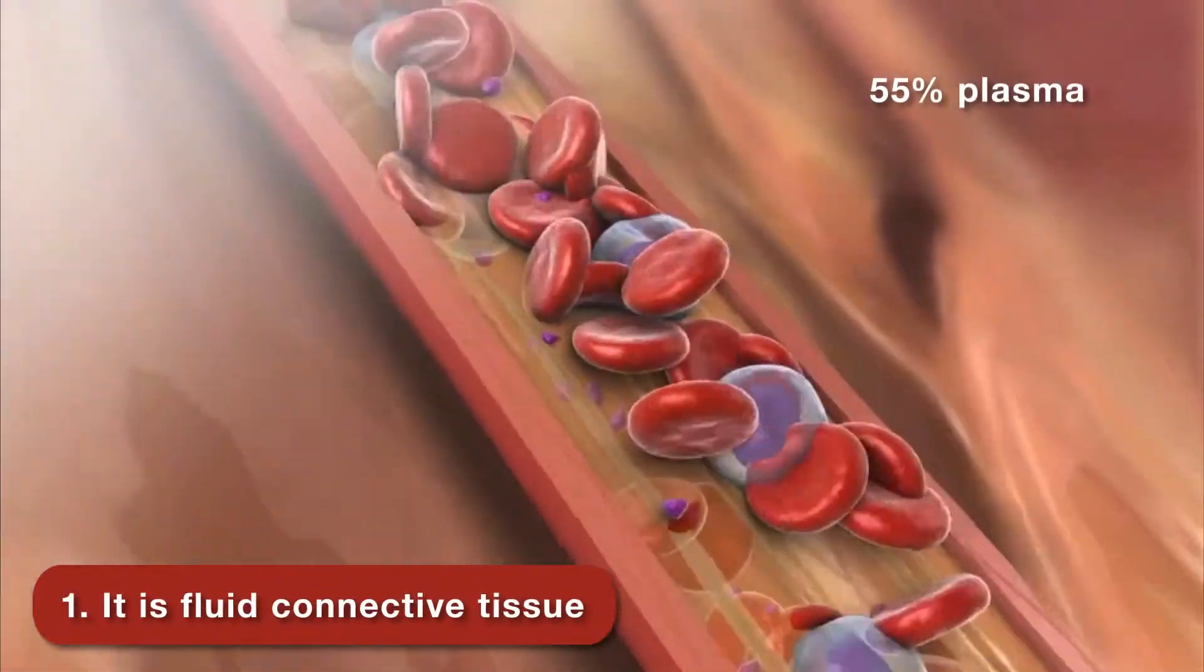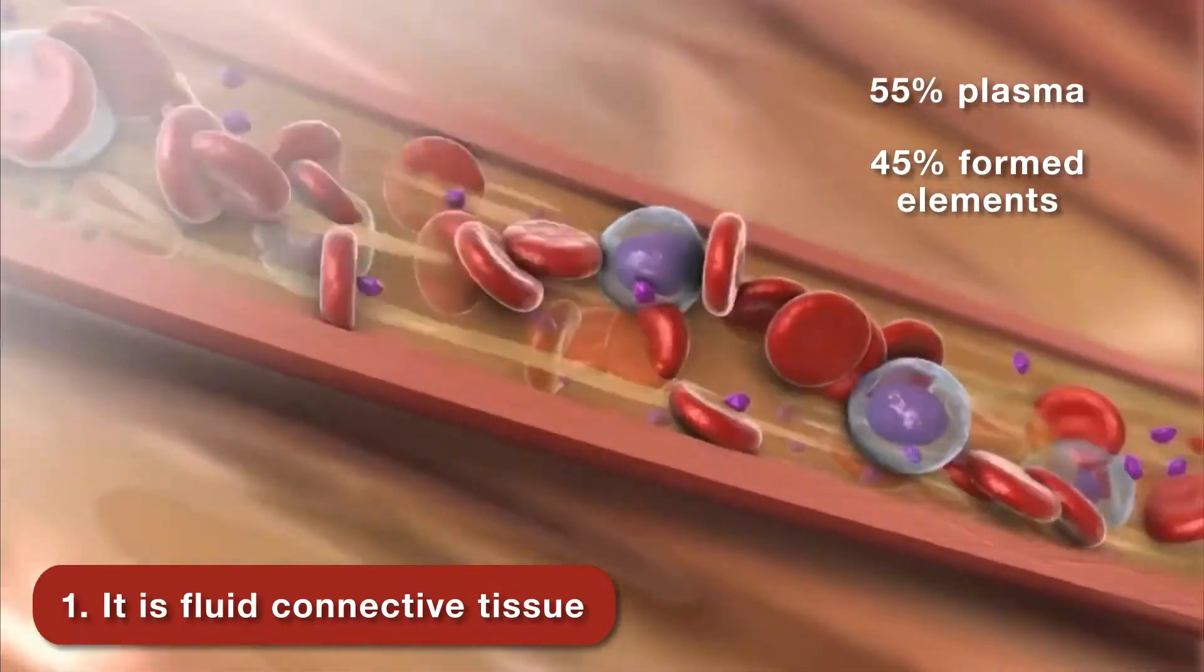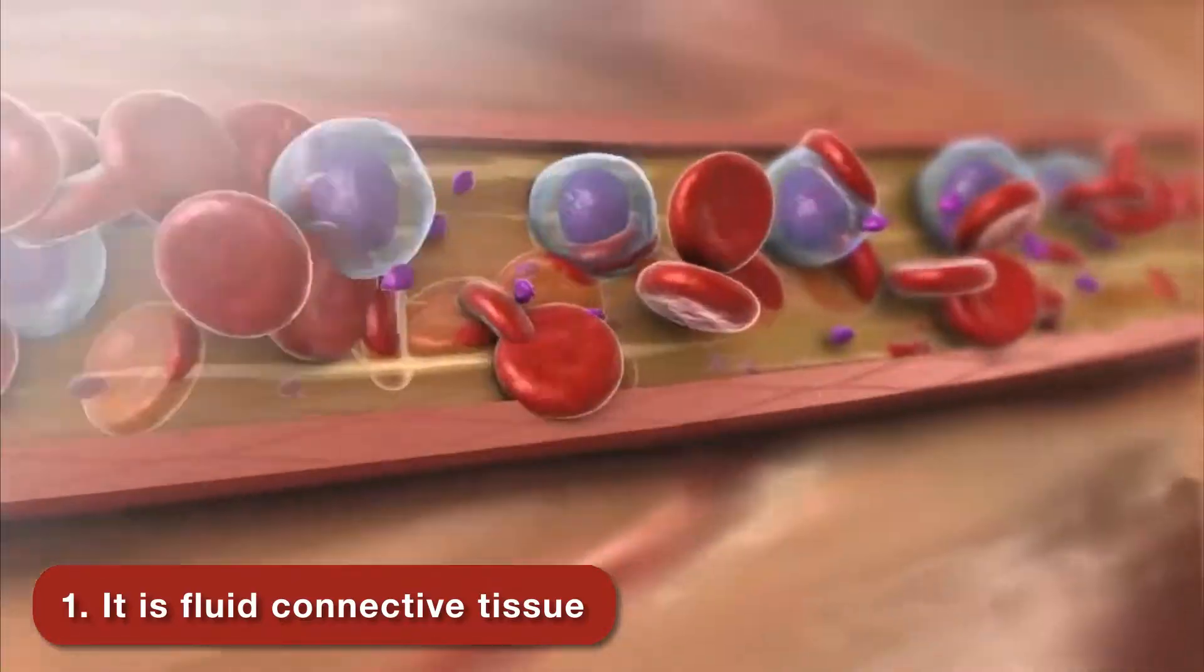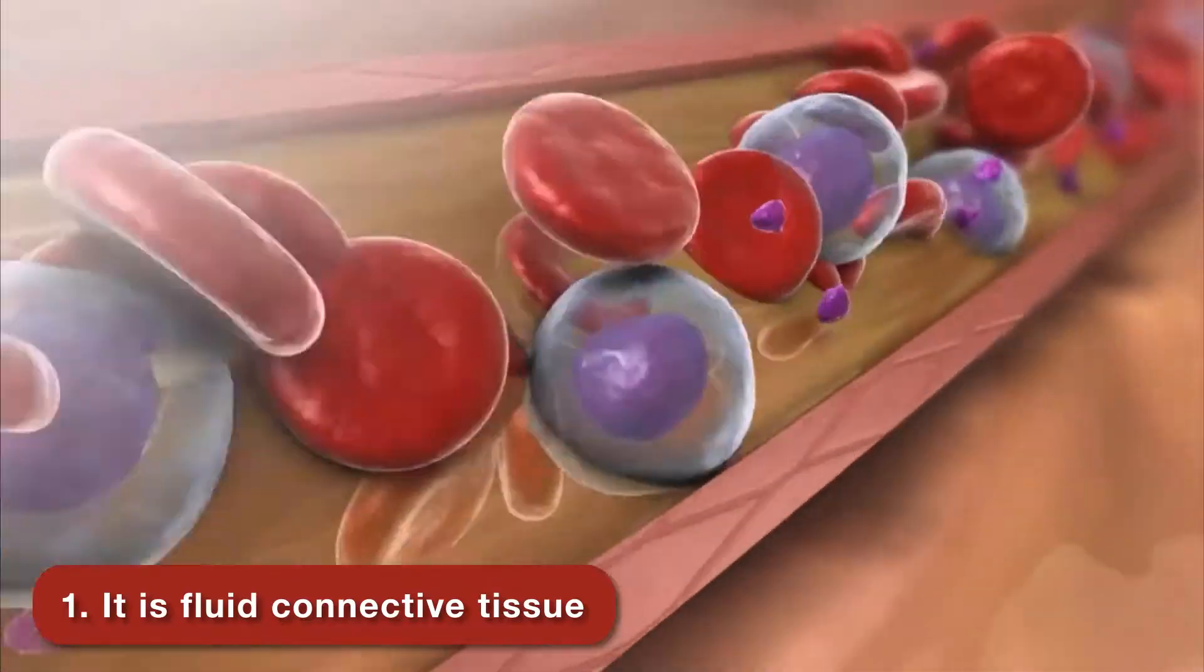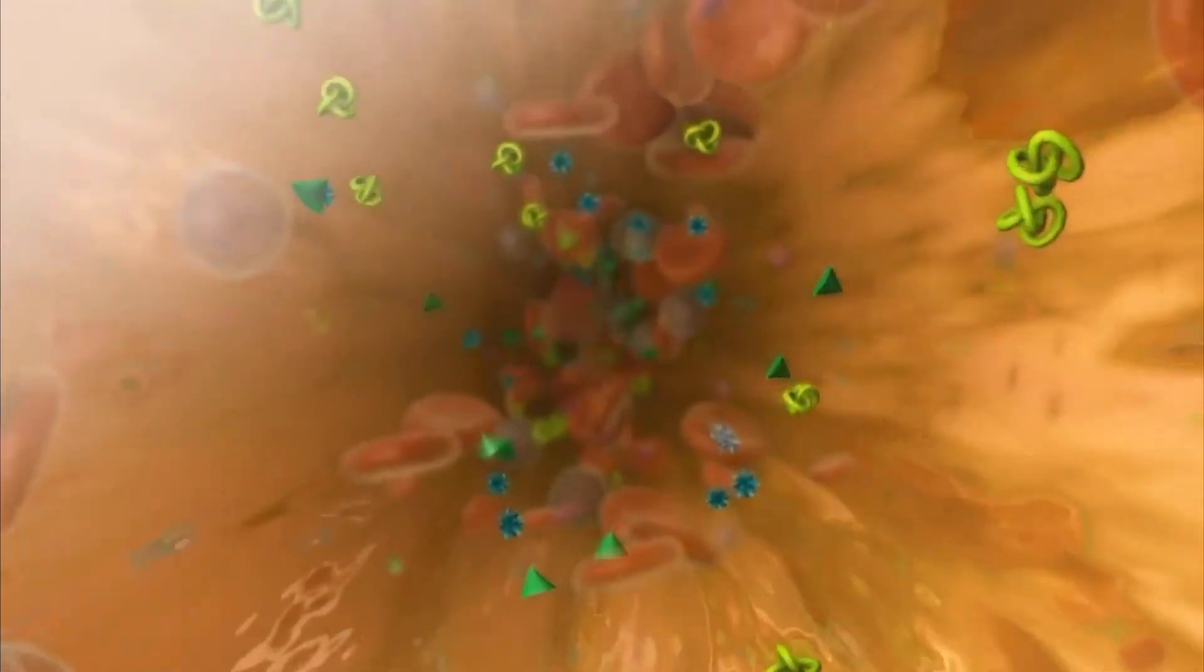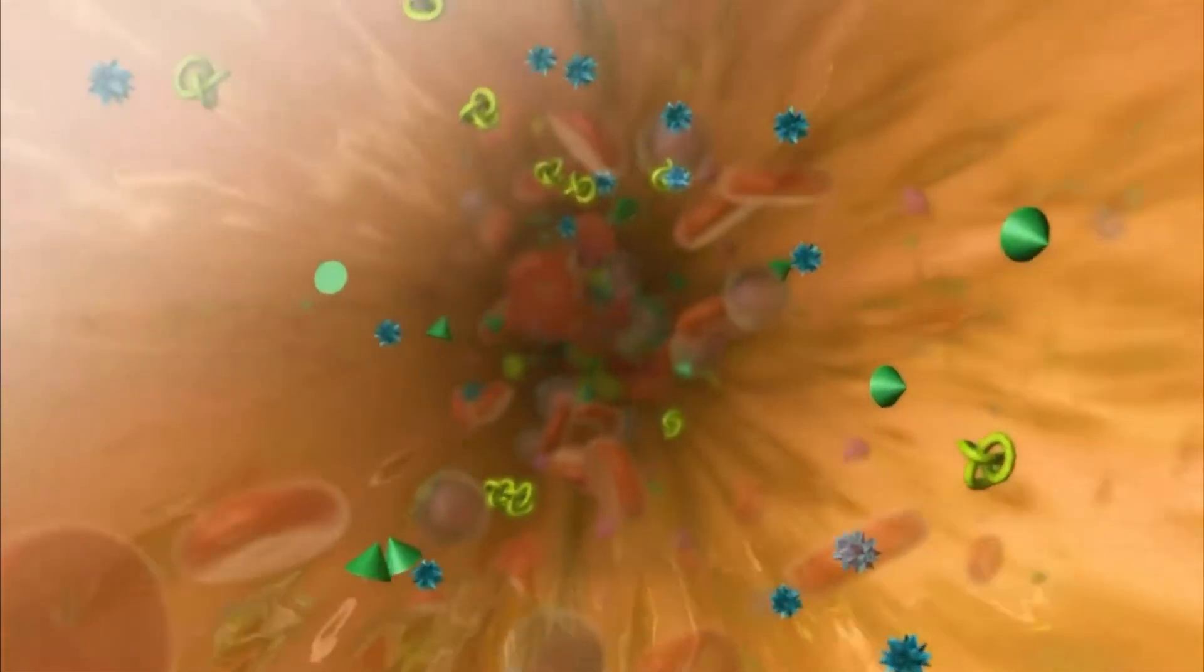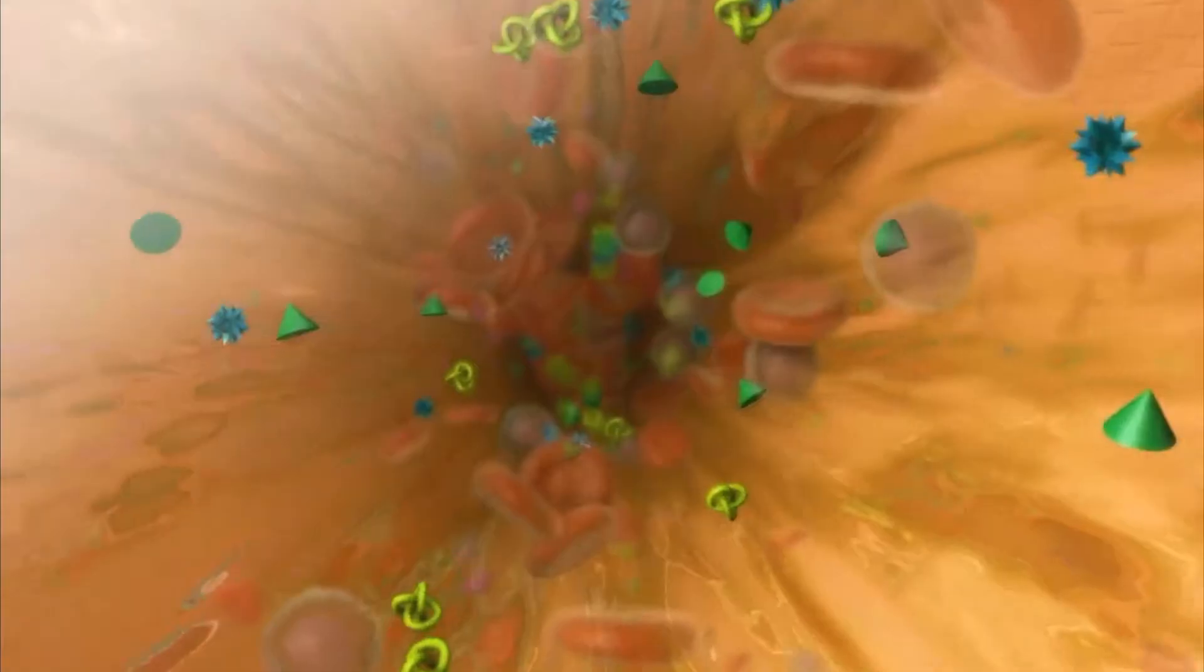Blood is composed of 55% plasma and 45% formed elements, including red blood cells, white blood cells, and platelets. Because of these living cells suspended in plasma, blood is considered the only fluid connective tissue in the body.